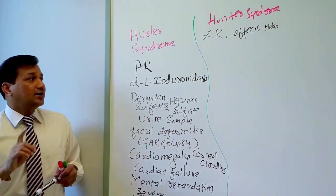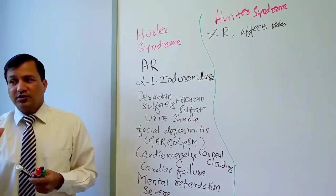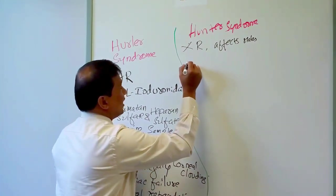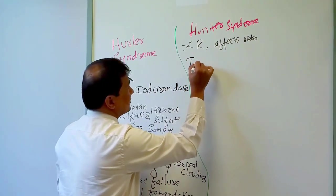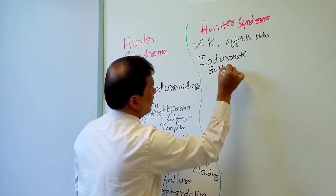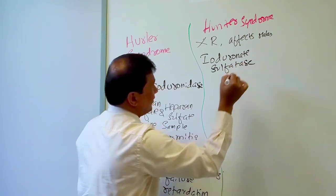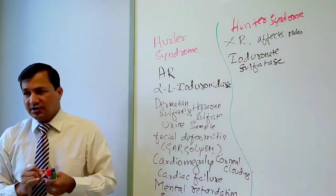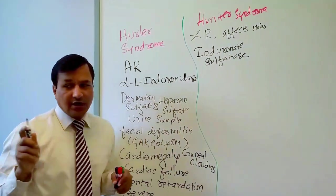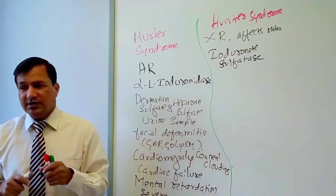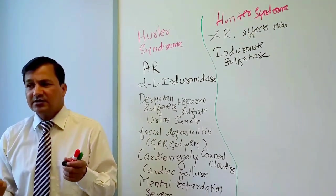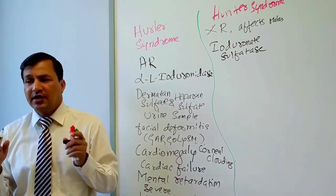The must-remember point for Hunter syndrome is that the deficient enzyme is iduronate sulfatase. This lysosomal enzyme is responsible for degradation of dermatan and heparan sulfate.